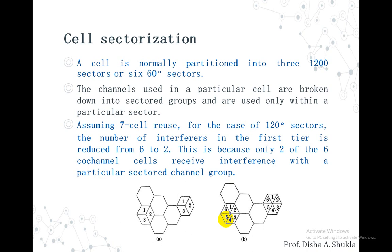Sectoring — or cell sectoring — is a technique of decreasing the co-channel interference and thus increasing system performance by using directional antennas. The factor by which co-channel interference is reduced depends on the amount of sectoring used. A cell is normally partitioned into three 120 degree sectors or six 60 degree sectors.